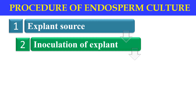For the in vitro culture of immature endosperm, the entire seed is surface sterilized, and the endospermic tissue is excised under aseptic conditions and then allowed to grow in the nutrition medium. This completes the inoculation of the explant.